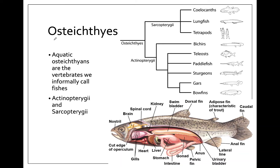The rest of the gnathostomes fall into a group called Osteichthyes, which is the bony fish — 'osteo' meaning bone. When this term was coined, it did not include the tetrapods; it just included things we would have considered fish. But since then we have reallocated these phylogenies, though the term stuck. So yes, you are a bony fish. Osteichthyes branches into two sister clades.